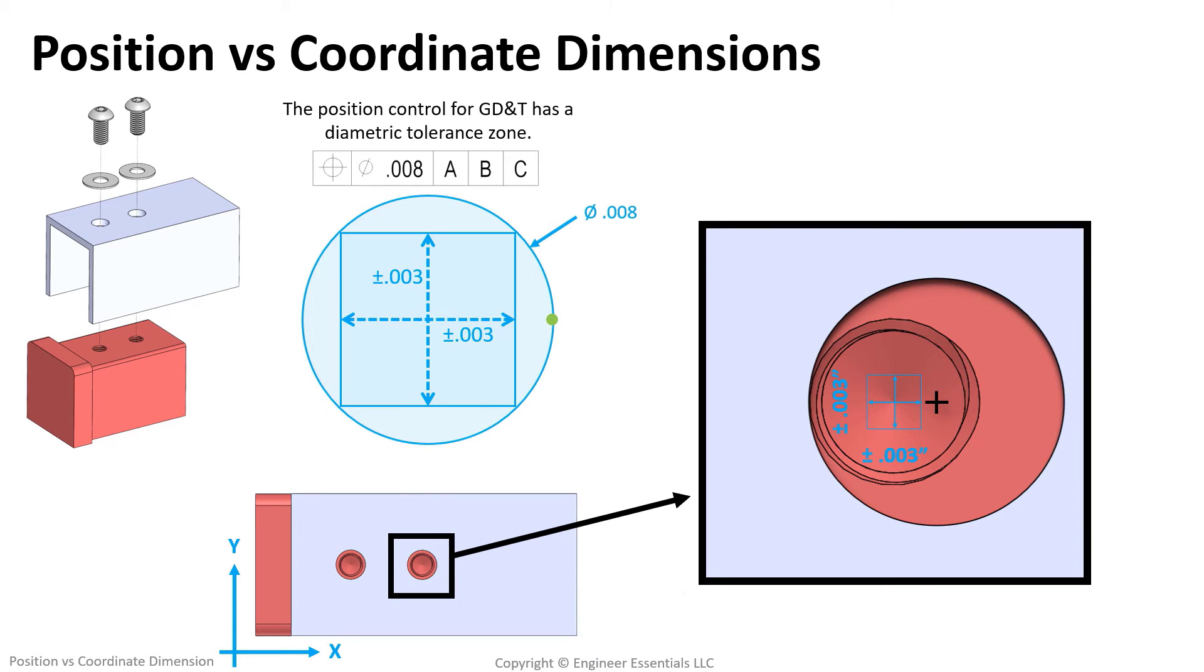But there's no reason round fasteners shouldn't have round tolerance zones. See here in this feature control frame that would allow this hole to have a diametric tolerance zone. Thus, including the locations we want, while excluding the locations we don't want.